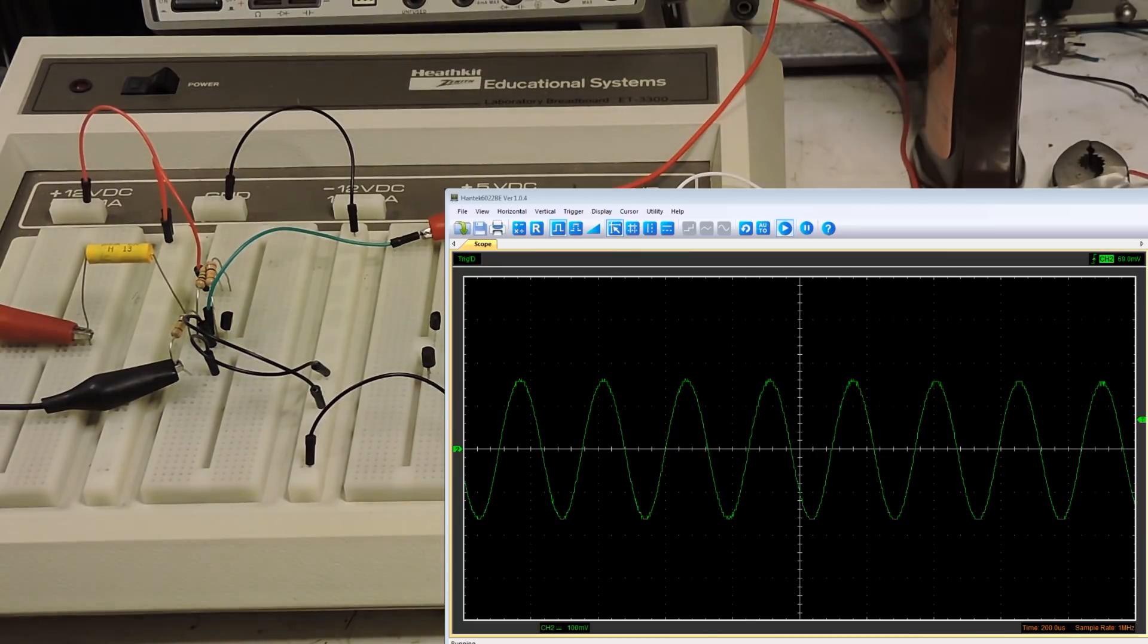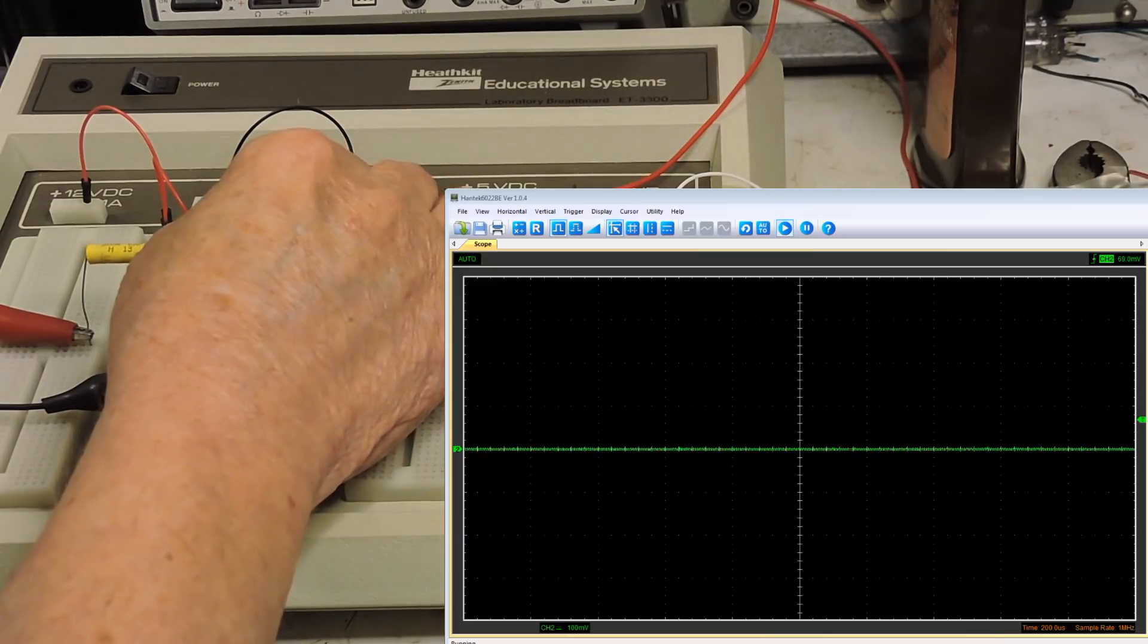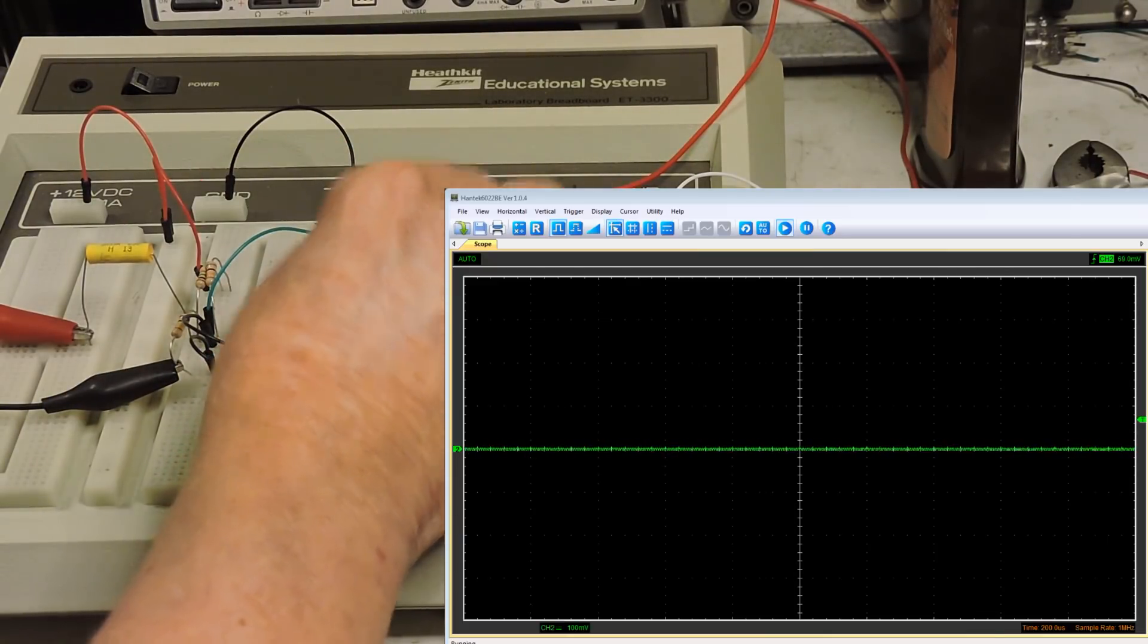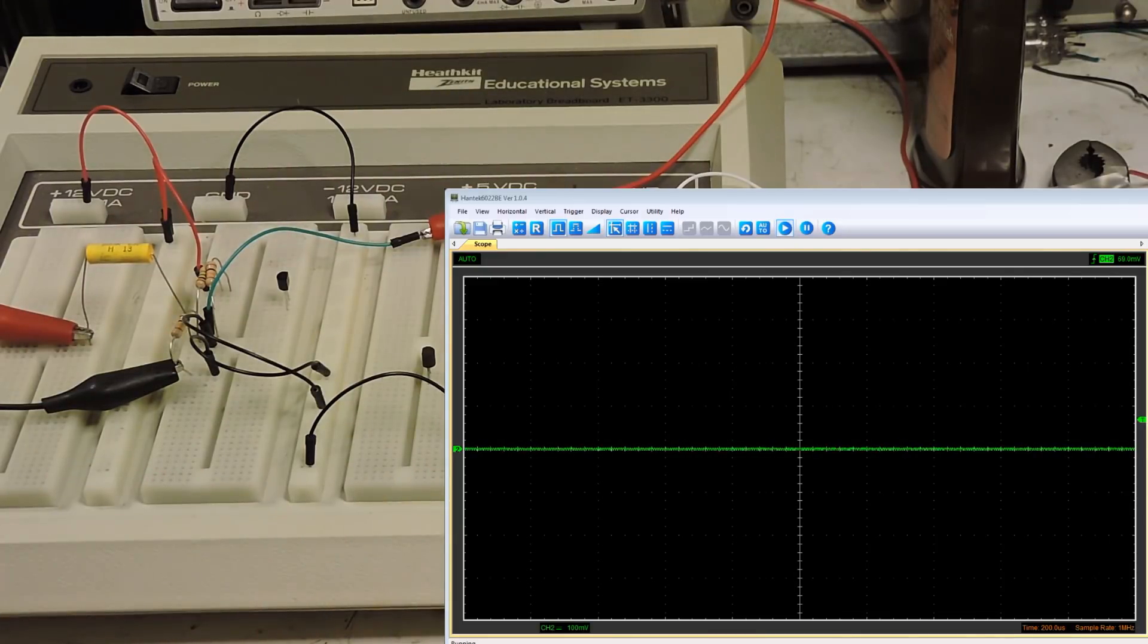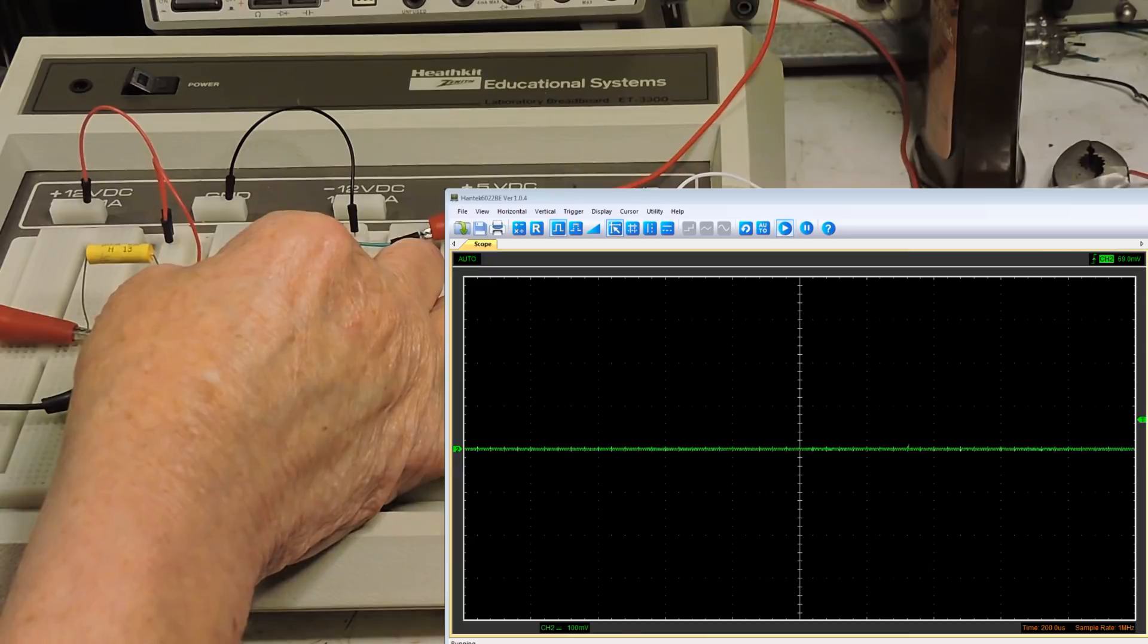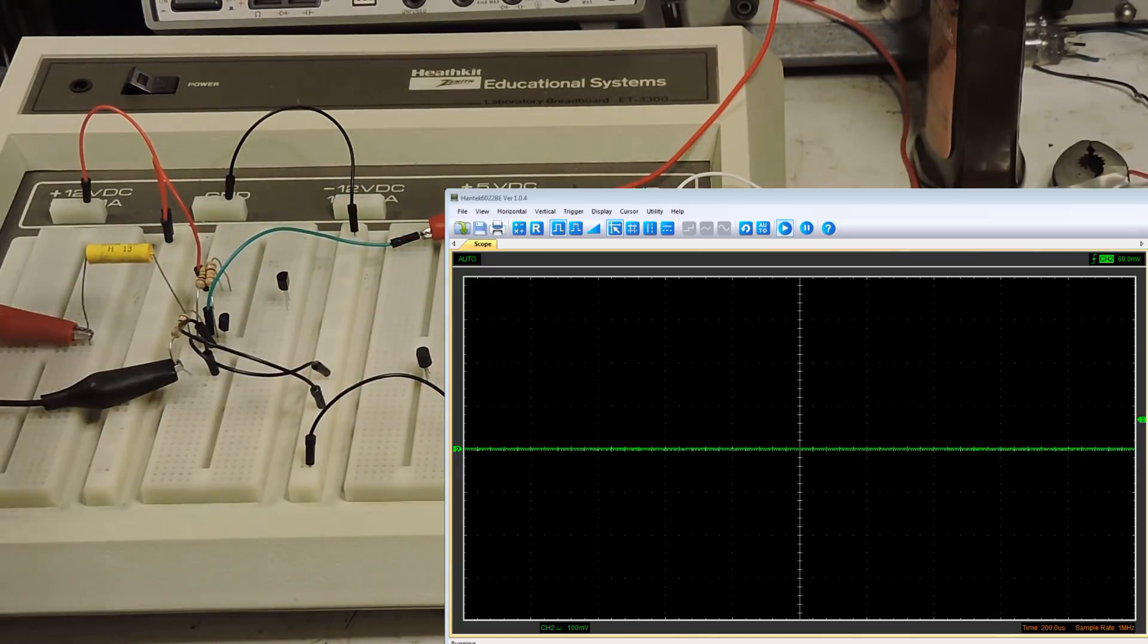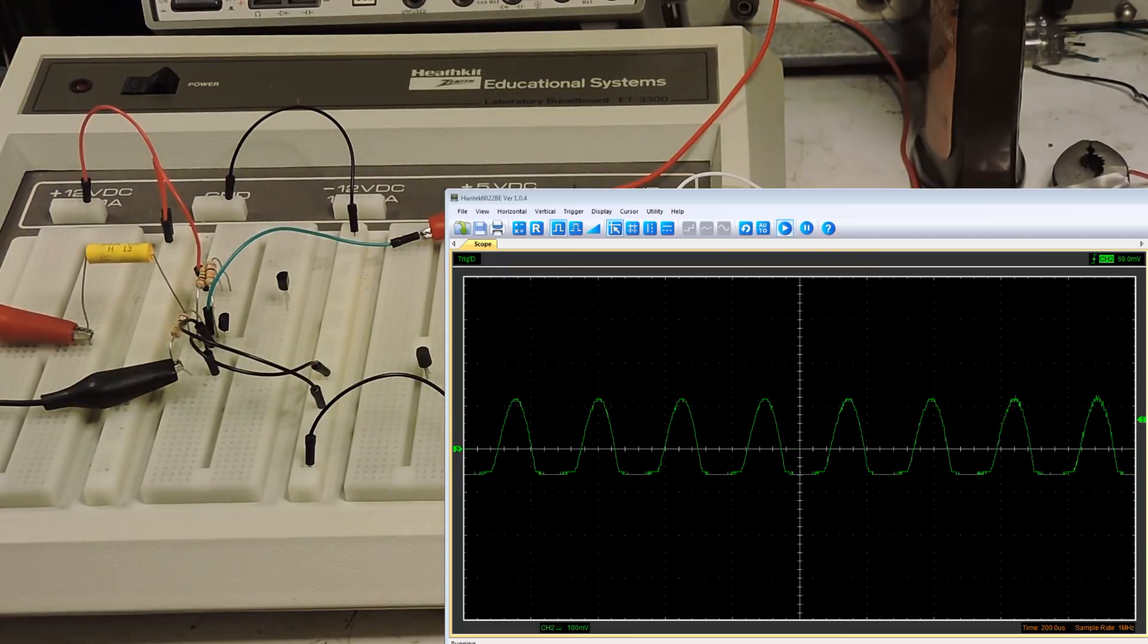Now we're going to put two more NPN transistors in the circuit with different betas. We're going to turn off the power. I'll unplug this first transistor. This is the 2N3904 with a beta of about 324. And the sine wave already looks pretty bad. And that's with a higher beta.